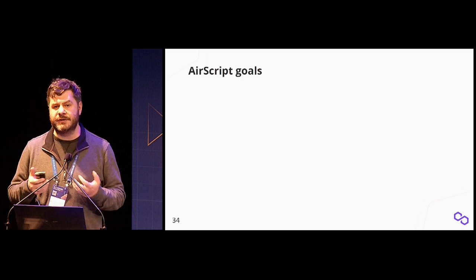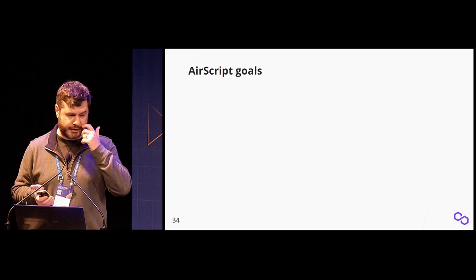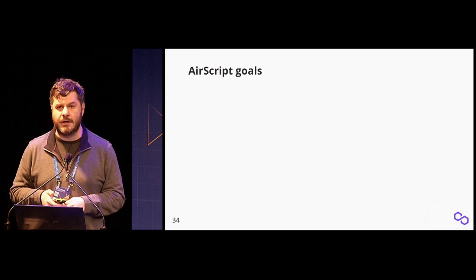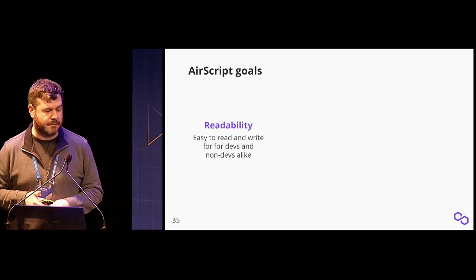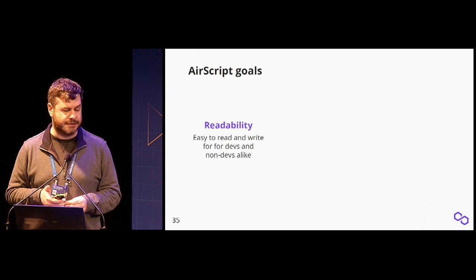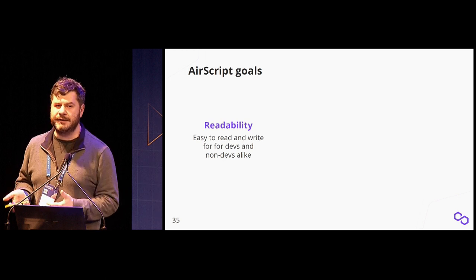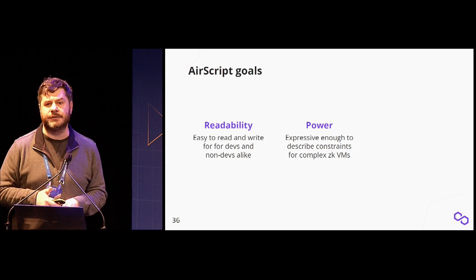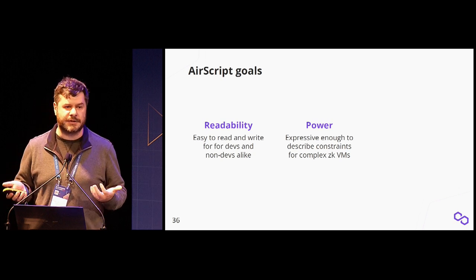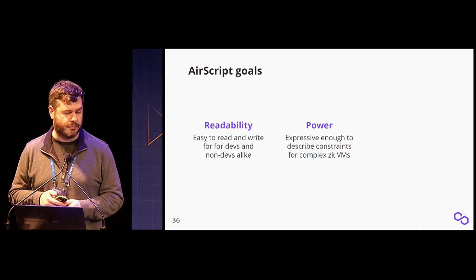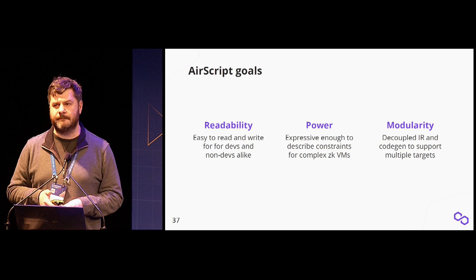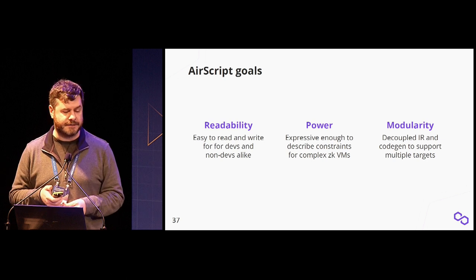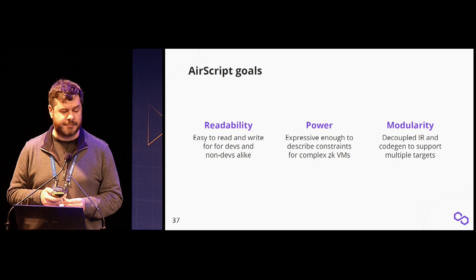The goals we have for AirScript: currently I'm working on MidenVM, which is a ZKVM—we describe constraints in Rust and we're switching to a DSL. The first goal is readability: constraints should be easily readable and auditable, as close to their mathematical expressions as possible. The second is that AirScript should be powerful enough to describe complex zero-knowledge virtual machines. The third is modularity—decoupled front ends and back ends with an intermediate representation that allows introducing new backends.